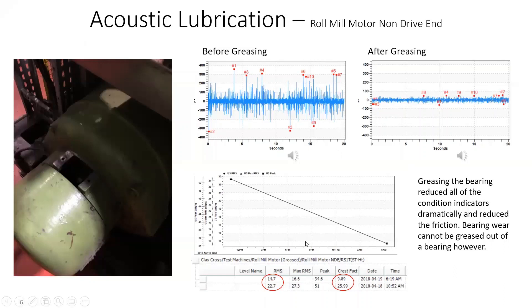But we were able to take it from almost 23 dB RMS down to 14.7 dB microvolt RMS and obviously a huge reduction in the crest factor as well. So again, clear indicator that ultrasound is a huge benefit for acoustic lubrication.